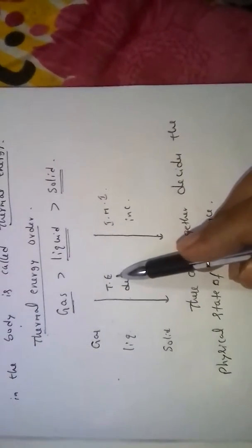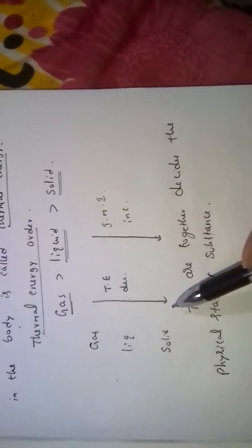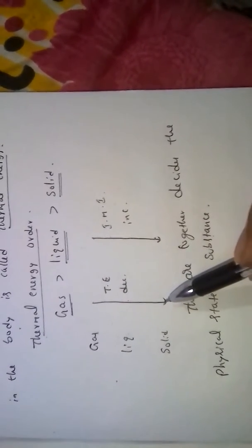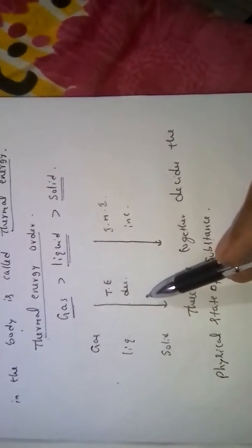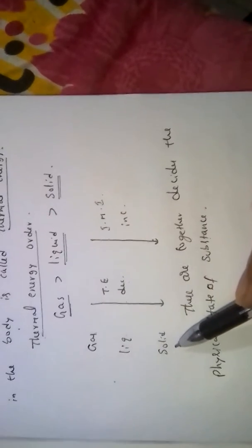As thermal energy decreases, gas converts to liquid and liquid converts to solid. At the same time, as intermolecular attractions increase, gas converts to liquid and liquid converts to solid. These together decide the physical state of the substance.